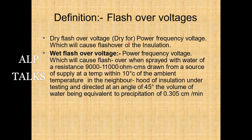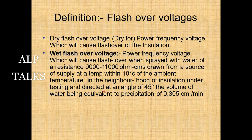Dry flashover voltage is the power frequency voltage which will cause flashover of the insulation. Wet flashover voltage is the power frequency voltage which causes flashover when the insulation is sprayed with water of resistance 9,000 to 11,000 ohm-centimeters, drawn from a supply at a temperature within 10°C of ambient temperature, directed at 45 degrees, with a volume equivalent to precipitation of 0.305 cm per minute.